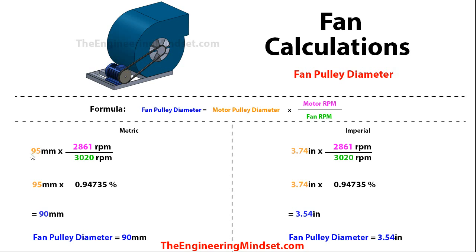So for the first calculation, we've got a 95 millimeter diameter pulley on the motor — that's 95 millimeters across, or 3.74 inches. And we know that the motor is going to be rotating at 2,861 RPM, same for the imperial. And then the fan, in order to achieve the airflow rate that we need, it's going to be rotating at 3,020 RPM, same for the imperial. If we do the division first, we get 0.94735 — it's a ratio since we're dividing the same units. So 95 millimeters multiplied by that ratio equals 90 millimeters, or 3.54 inches. So the fan pulley diameter needs to be 90 millimeters in order to achieve the design.